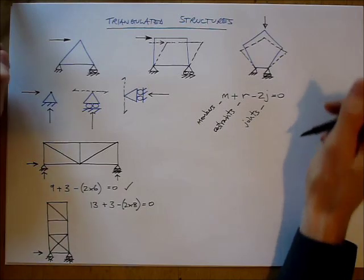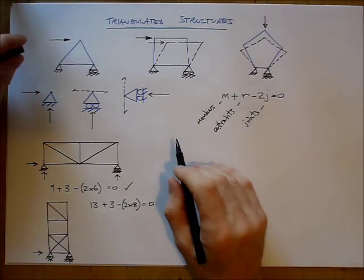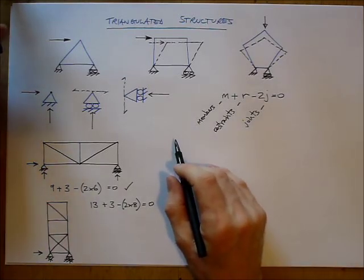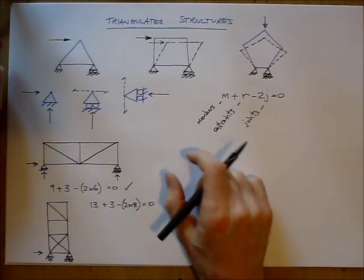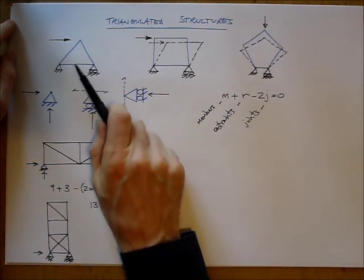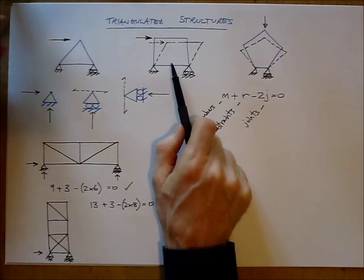Well, not really. At the same time that you're checking for statical determinacy, you should also be checking for mechanisms. A triangle is a nice strong shape. A square is not so. It can sway. And it can, because of that, we say that it can form a sway mechanism.